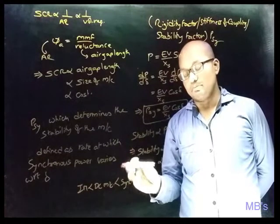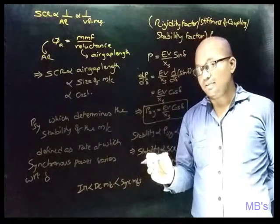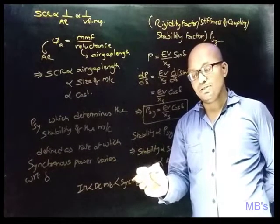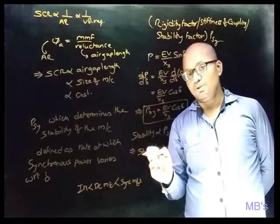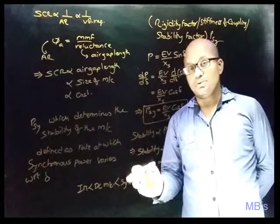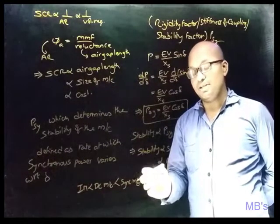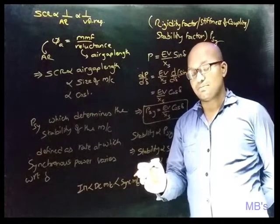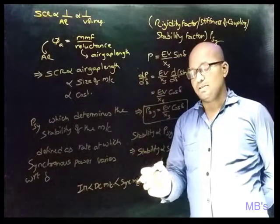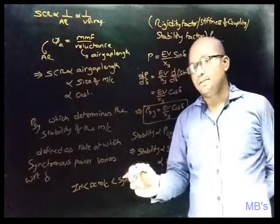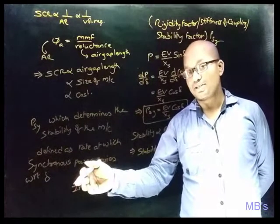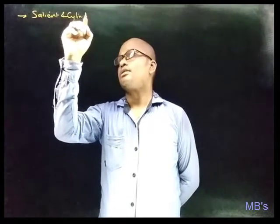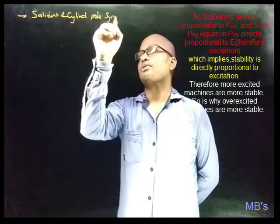Stability is directly proportional to the short circuit ratio and air gap length. Comparing air gap lengths: induction machines have less air gap, DC machines are in between, and synchronous machines have the most air gap length. The synchronous machine has more air gap than the induction motor because the induction motor is designed to operate at good power factors — a smaller air gap gives better power factor.